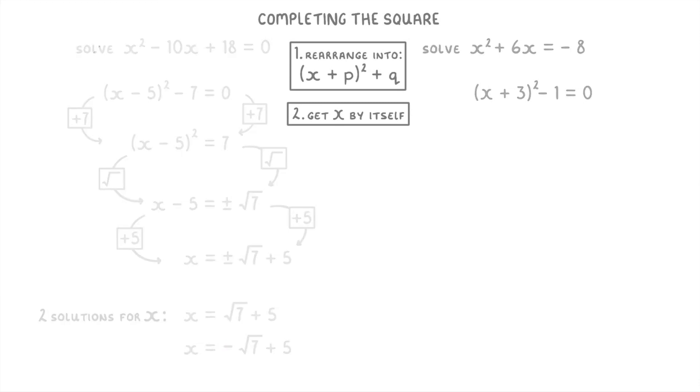For this next question, x plus 3 squared minus 1 equals 0, we do basically the same thing. So first, we add 1 to both sides to get x plus 3 squared equals 1.